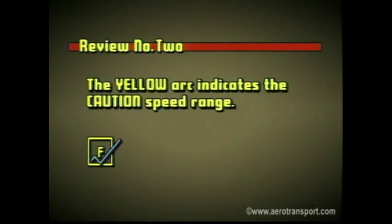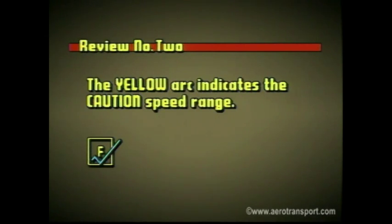True or false: an aircraft can generally be operated safely in the yellow arc on the airspeed indicator? False. The yellow arc indicates the caution speed range, which means the aircraft may only be flown at this airspeed in smooth air. Since it is difficult to predict turbulence, the aircraft should never be flown intentionally in this range.